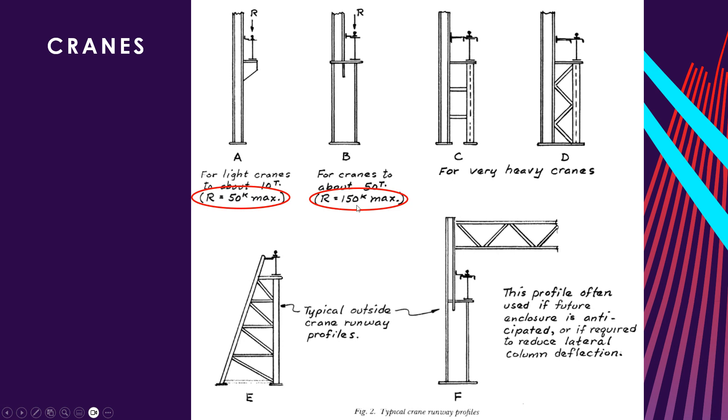For cranes here, the step columns, you're going to want to go about 150 kips max. They say about 50 tons. The other thing here is for light cranes, about 10 tons. That's not true. You can get up to a 20 ton, like a single 20 ton in the aisle. But if you have multiple cranes in one aisle that are 20 ton, you're going to really exceed that 50 kips max real quick. And these are, it says, for very heavy cranes.